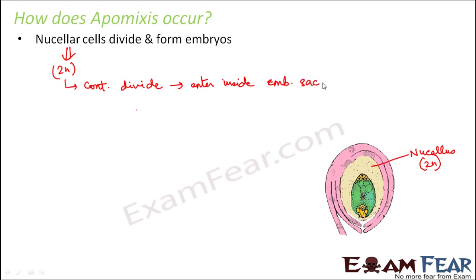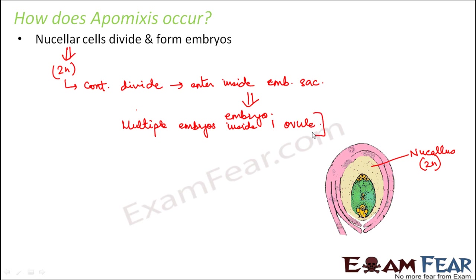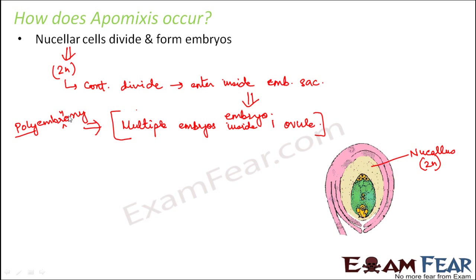The cells entering the embryo sac, formed by continuous division of nucellus cells, gradually develop into embryos. The result is that multiple embryos are formed inside one ovule or inside one embryo sac. This is known as polyembryony — meaning many embryos inside one ovule.